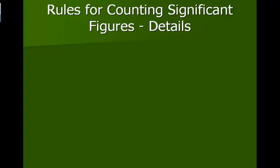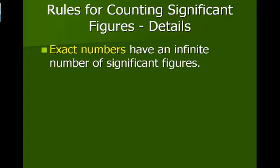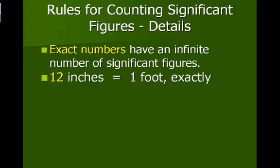Now, exact numbers have an infinite number of significant figures, and we can't really count infinity, so we don't assign significant figure value to exact numbers, so 12 inches is equal to one foot exactly. We wouldn't assign significant figures because there's really no estimated number.